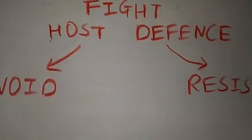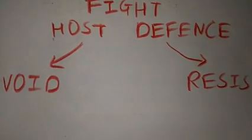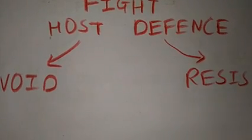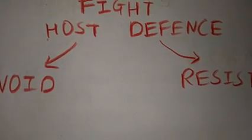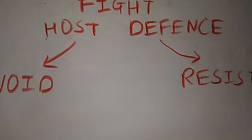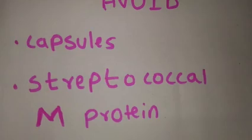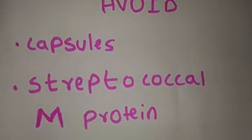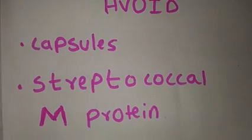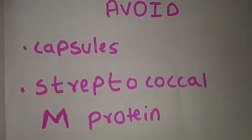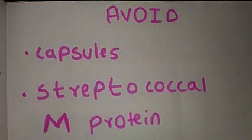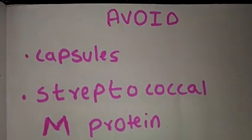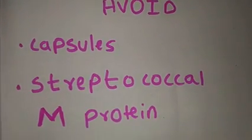Bacteria fighting against host defense have two methods: first, they avoid the fight, and second, they engage and resist. In avoiding the fight, bacteria have capsules — for example, H. influenzae, Streptococcus pneumoniae, and Neisseria meningitidis are all capsulated organisms.